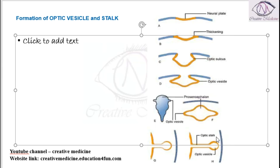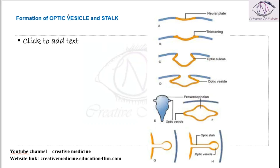So this is the first part which is formation of optic stalk and optic vesicle. This is the first part of the eye formation or eye development.